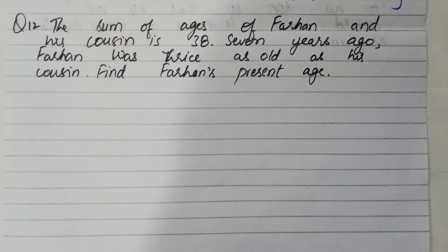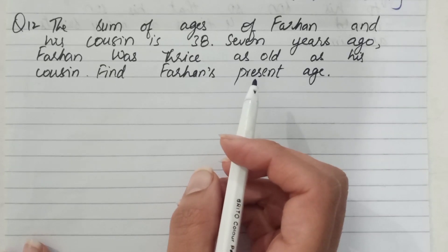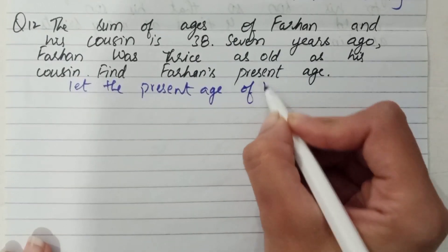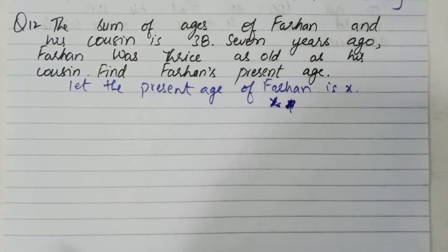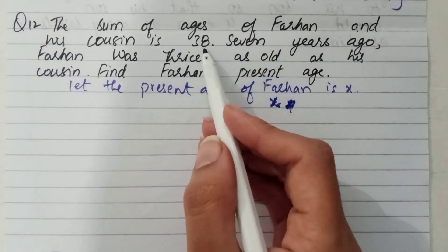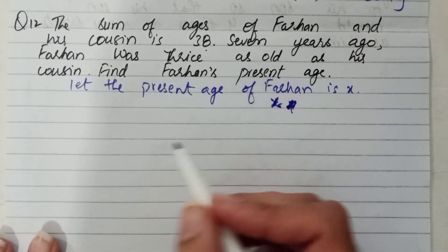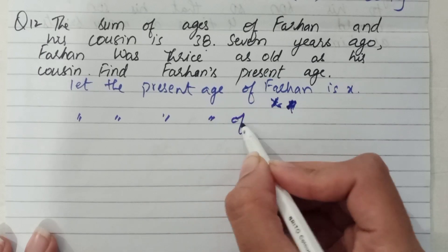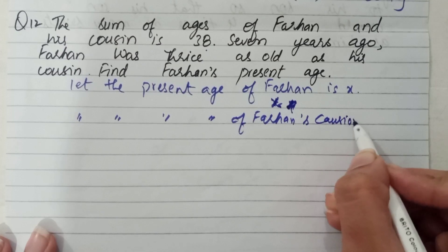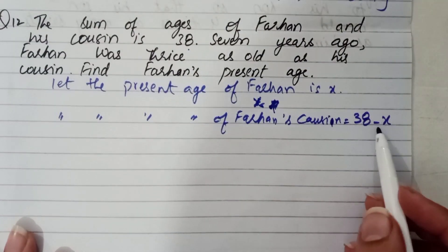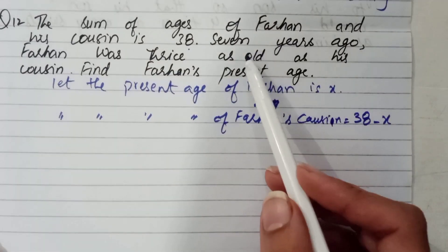Question number 12: The sum of the ages of Farhan and his cousin is 38. Seven years ago, Farhan was thrice as old as his cousin. Find Farhan's present age. We suppose the age of Farhan — let the present age of Farhan be x. Since their sum is 38, the age of Farhan's cousin is 38 − x.